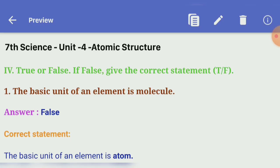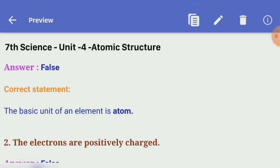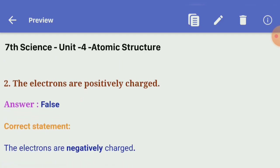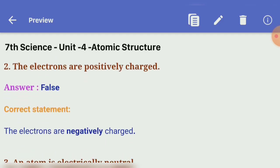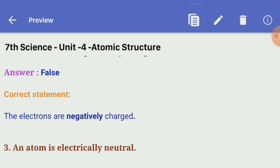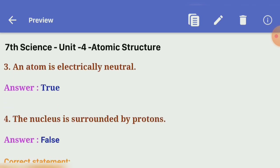Fourth section: True or False — give the correct statement if false. First: the basic unit of an element is molecule — False. Correct: the basic unit of an element is atom. Second: the electrons are positively charged — False. Correct: the electrons are negatively charged. Third: an atom is electrically neutral — True.